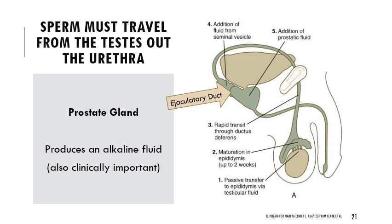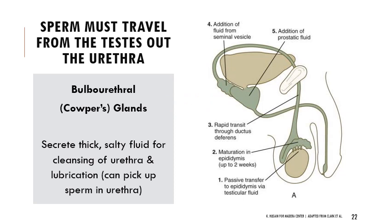The prostate gland contributes to the alkaline nature of semen and is clinically important — prostates are important to get checked, and there are many cancerous situations associated with it. There are also Cowper's glands, or bulbourethral glands, which produce pre-ejaculation fluid — a thick, salty fluid to cleanse the urethra, provide lubrication, and can also pick up sperm already in the urethra. So if there's been a prior ejaculatory event, those Cowper's gland secretions mean the pullout method will not be effective.